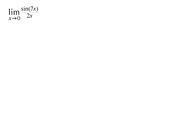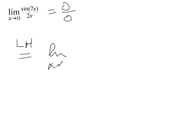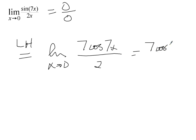If you end up with something like sin(7x) over 2x as x approaches 0, that's again 0 over 0, and you can take the derivative of the top using the chain rule. That derivative is 7 cos(7x), and the denominator is just 2. Plugging in 0 for x gives you 7 times cos(0) over 2, which is 7/2.